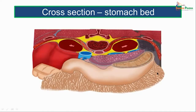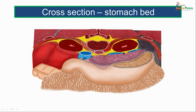Another picture confirms this arrangement: anteriorly the stomach, behind it the omental bursa, then the spleen, the kidney, the abdominal aorta, inferior vena cava, and the right kidney. The omental bursa clearly separates the stomach bed from the stomach.